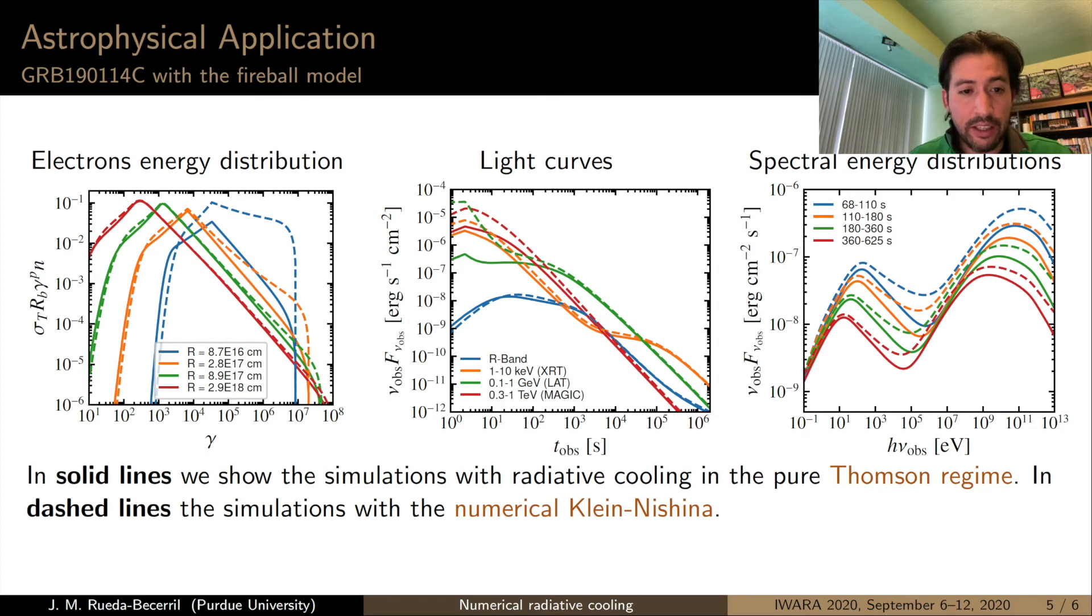As we can see, for the electrons energy distributions at the first stages of the explosion, Klein-Nishina corrections has a lot of effect in piling up high energy electrons. These automatically can be translated into light curves. As we can see in the first 100 seconds of the light curves we can see disparity between the light curves of the high energy bands, and also in the spectral energy distributions we can see some disparities in many different bands.